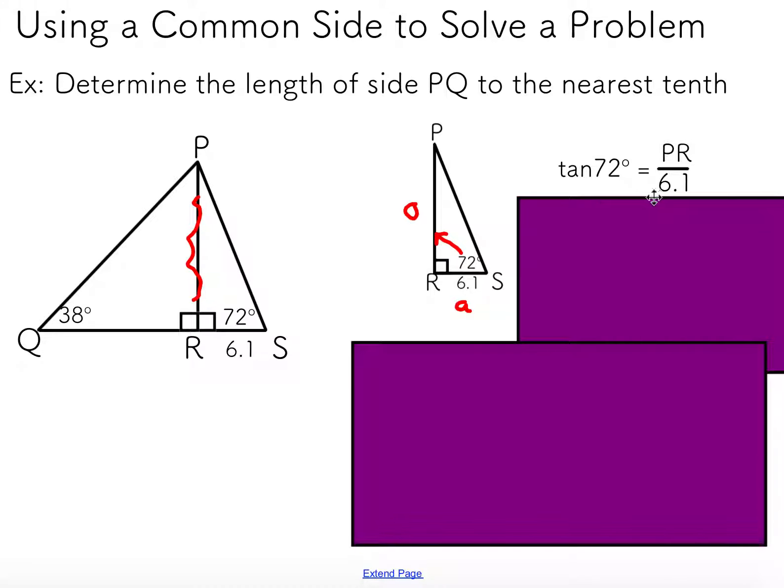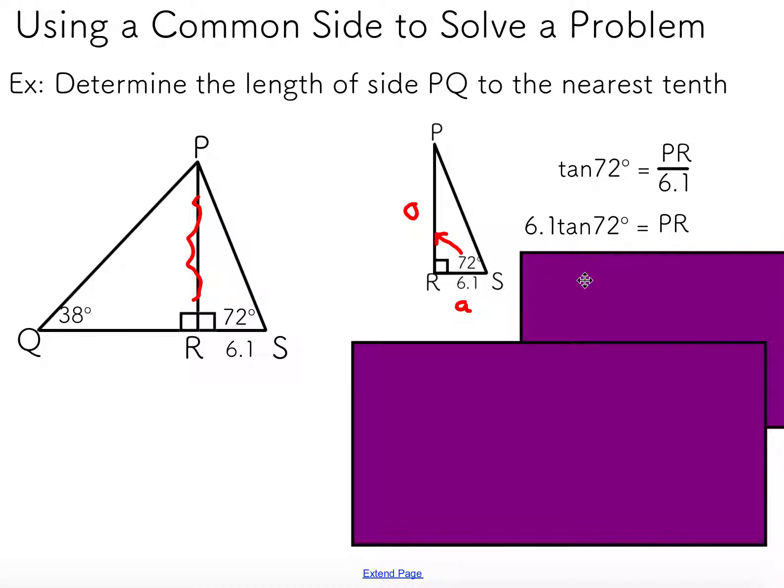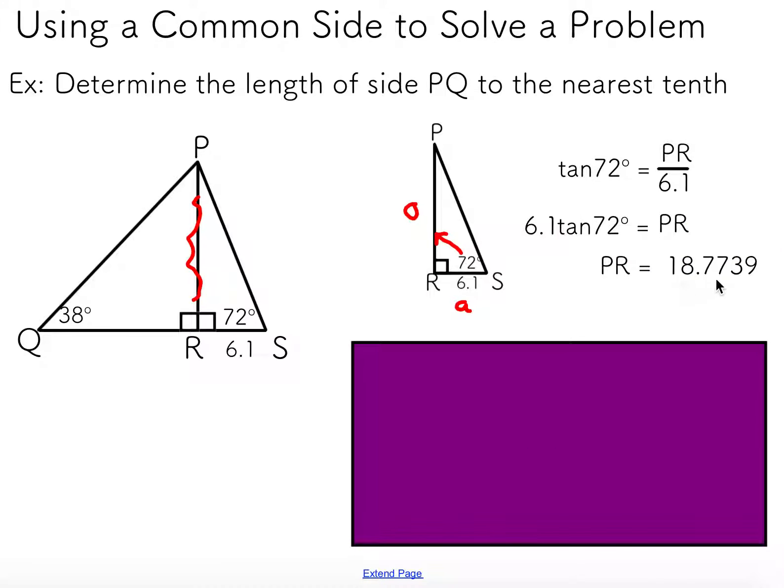If I multiply the 6.1 up to the other side, I've solved for PR. If I just punch this into my calculator, if I'm in degree mode, I should get 18.7739. I just kept four decimal places here.